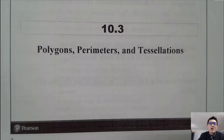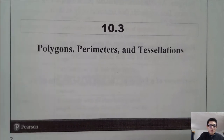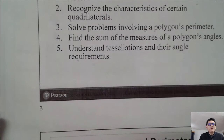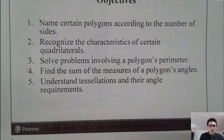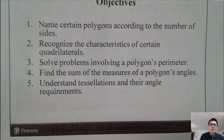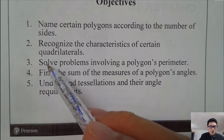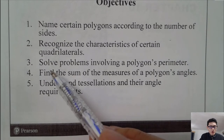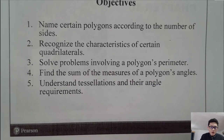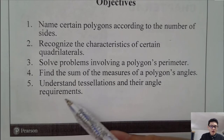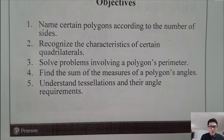Hello everyone, welcome back to another week of lectures. This week we are going to study sections 10.3 and 10.4. Section 10.3 is about polygons, perimeters, and tessellations. The objectives are: to name polygons according to the number of sides, to recognize the characteristics of certain quadrilaterals, to solve problems involving polygon perimeters, to find the sum of a polygon's angles, and to understand tessellations and their angle requirements.